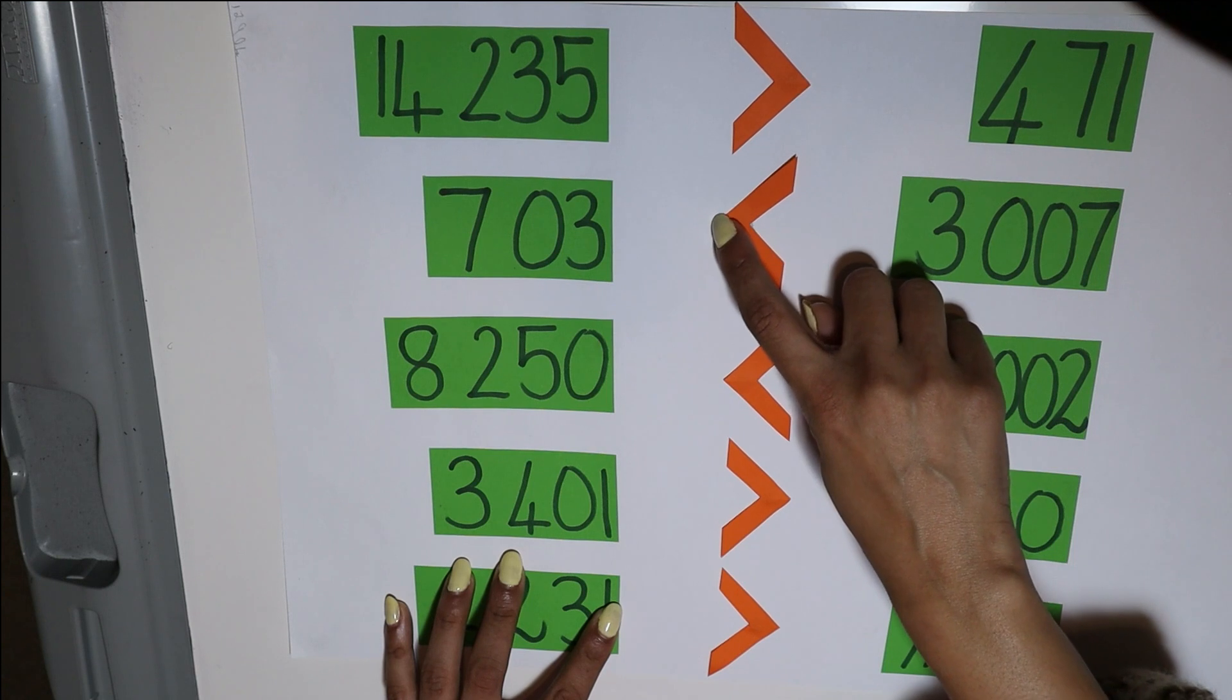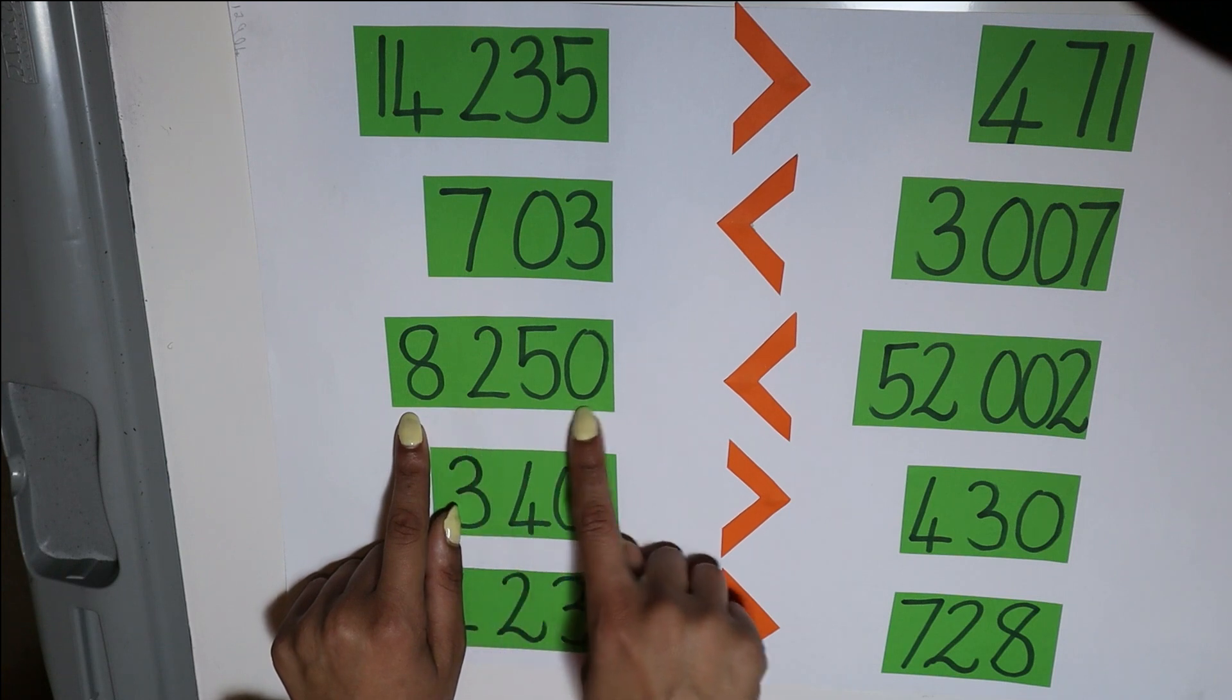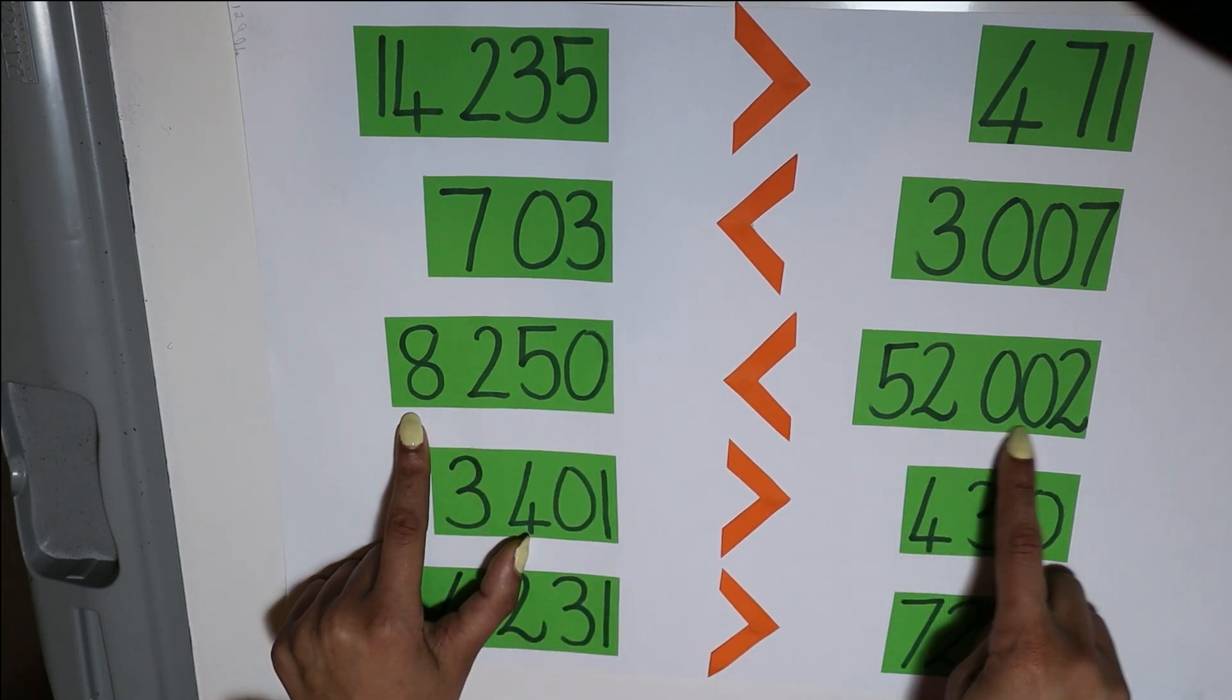And automatically, then when I read the next one, this would be less than that. Remember, we read it from left to right. 8,250 is less than 52,002.